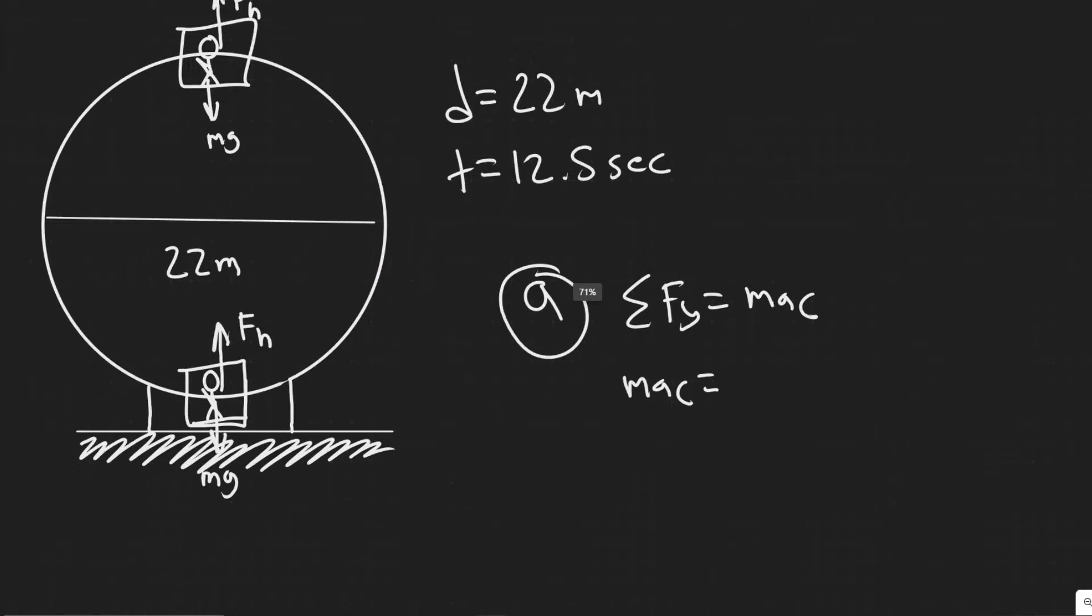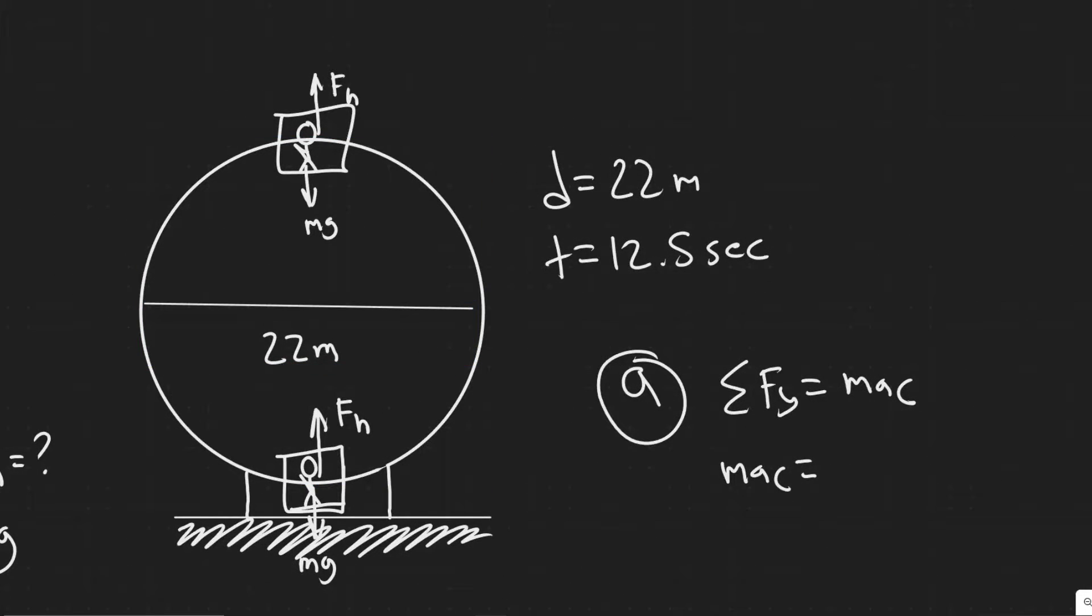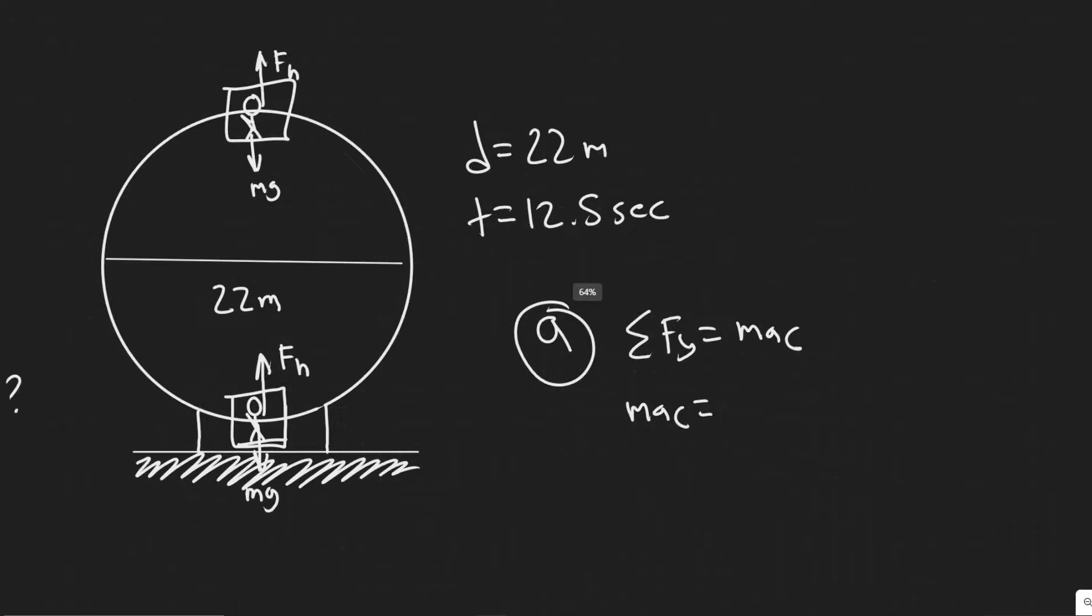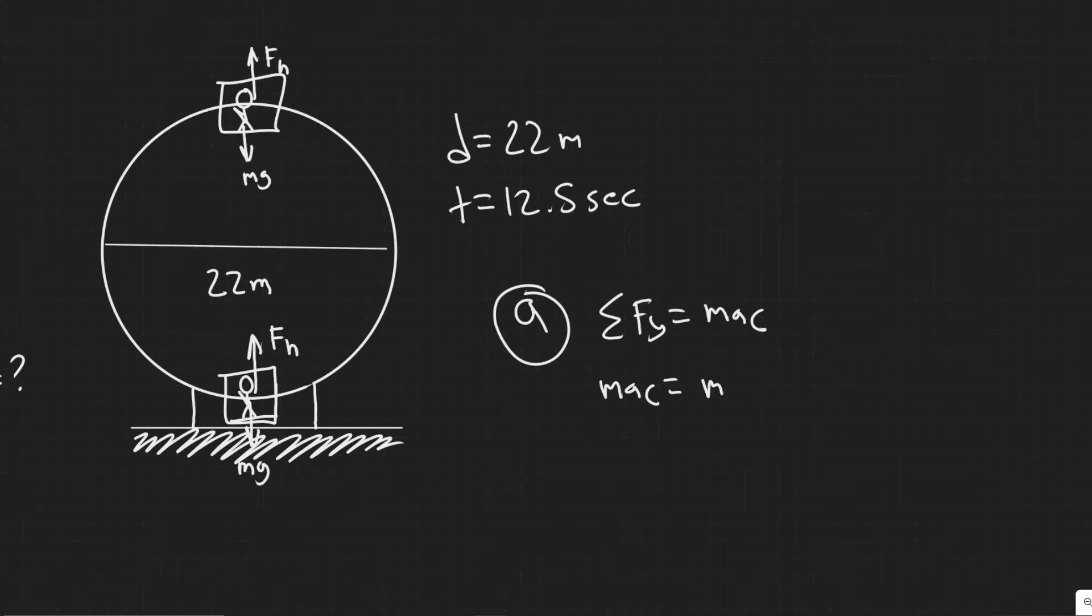And then you just add the forces. So when you're doing a rotating problem like this, you say it's positive if it points inwards or negative if it points outwards. So in this case, we have mg minus F sub n. Right? And the reason that is, is because F sub n is pointing upwards, outwards, and then mg is inwards.